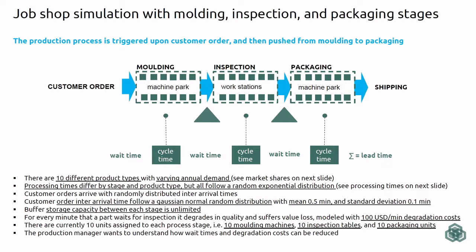The starting point for the specific case study is that we assume we have 10 different product types, and they have different market shares and varying annual demands. The processing times of the product types differ — there are different processing times across the different processes for each product type. We also have some idea of what the annual demand looks like, with some random distribution involved. Currently we have 10 molding machines, 10 inspection tables, and 10 packaging units.